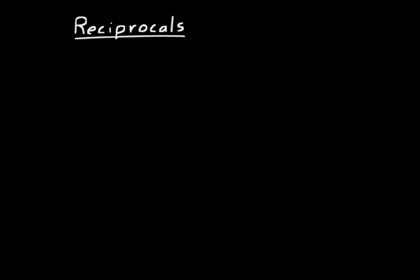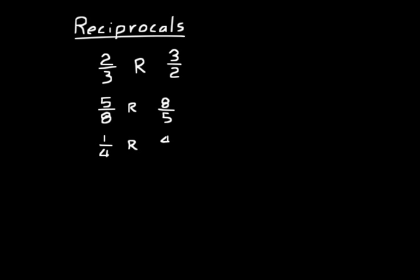Now let's talk about reciprocals — a special kind of fraction. If you have two-thirds, the reciprocal is found by trading places with the numerator and denominator, giving you three over two. For example, the reciprocal of five over eight is eight over five. The reciprocal of one-fourth is four over one, which we write simply as four. To find the reciprocal, you just flip the fraction.